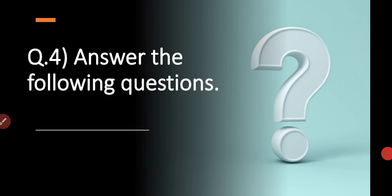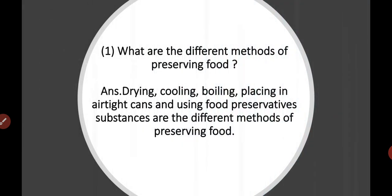Answer the following questions. Question 1: What are the different methods of preserving food? The answer is: drying, cooling, boiling, placing in airtight cans, and using food preservative substances are the different methods of preserving food.